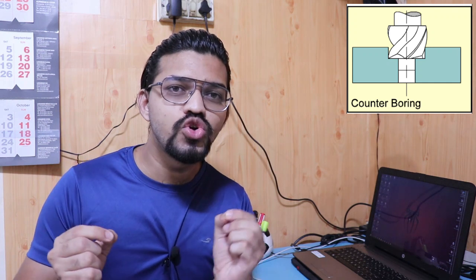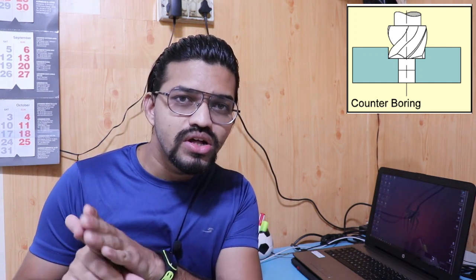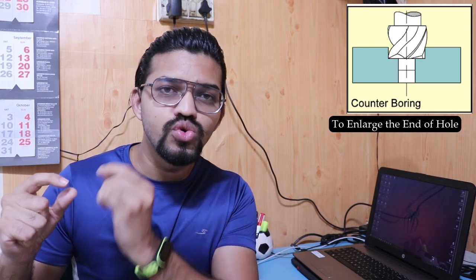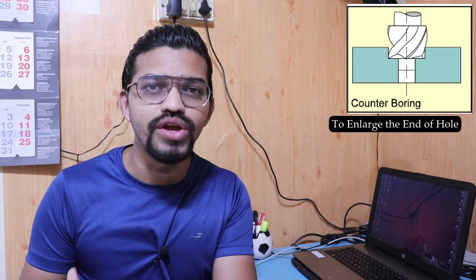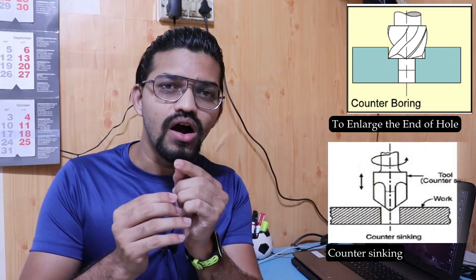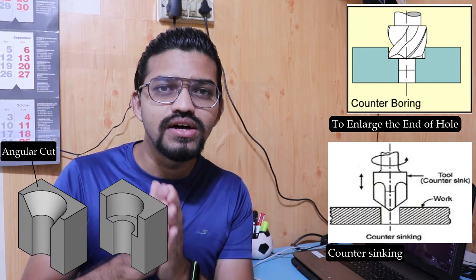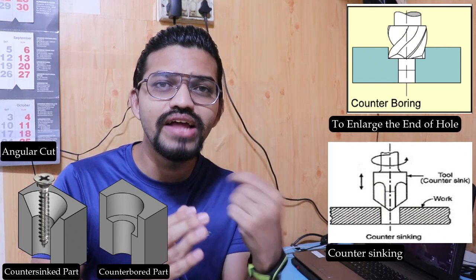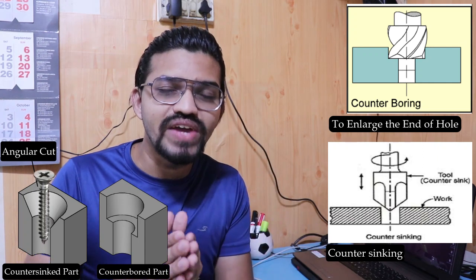Counter boring is another operation where a specialized tool of a different diameter is used to enlarge only the end of a previously drilled hole. Counter sinking is a related operation where an angular recess or angular cut is made at the end of a hole, allowing a CSK (countersunk) screw to be inserted and sit flush inside that particular hole.